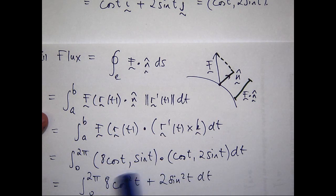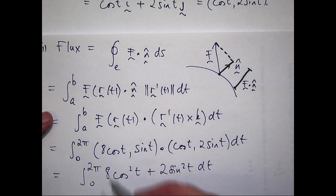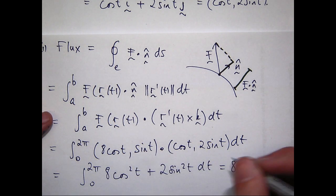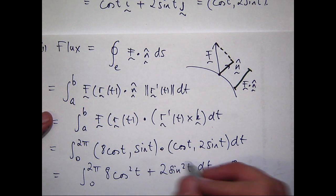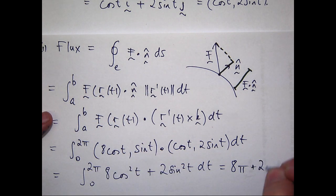And when I integrate those two things, well, if I integrate cos t squared, I'm going to get, from 0 to 2 pi, I'm going to get pi. So this is actually going to give me 8 pi. When I integrate sin t squared from 0 to 2 pi, I'm going to get pi again. So actually my answer is 10 pi.